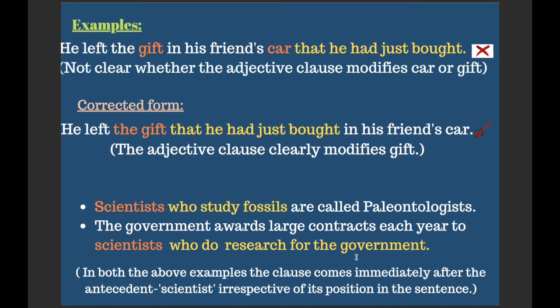The second example is: 'The government awards large contracts each year to scientists who do research for the government.' In both examples, the adjective clause comes immediately after the antecedent. The noun can appear anywhere in the sentence — it does not need to be at the beginning. What matters is that the noun should always be followed by the adjective clause to avoid confusion.